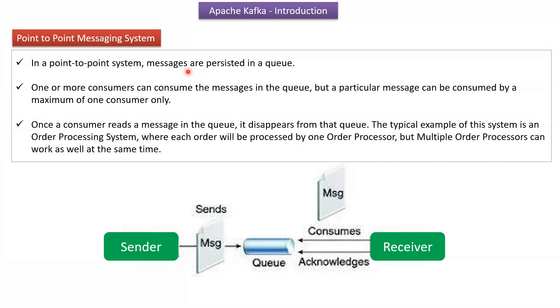In a point-to-point messaging system, messages are persisted in a queue. One or more consumers can consume messages from the queue, but a particular message can be consumed by a maximum of one consumer only. Once a consumer reads a message from the queue, the message disappears from the queue. A typical example is an order processing system, where each order is processed by only one order processor, but multiple order processors can work at the same time.